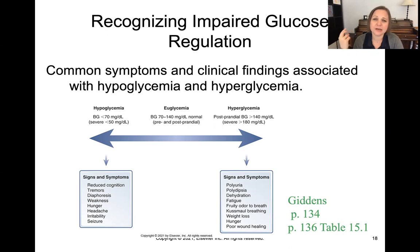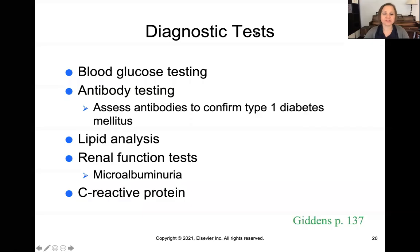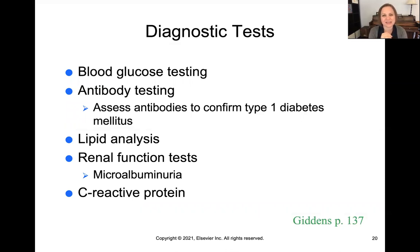Write those down: polydipsia, polyphagia, polyuria — urinating a lot, very thirsty, and very hungry. If you prefer an infographic, there's one here; you can pause and take a look. In terms of diagnostic tests, some things we can do quickly and others over time. The blood glucose finger-stick test at the bedside can be done quickly — it's minimally invasive, with a result within two minutes — which is really useful if you're worried a patient is hypoglycemic and needs immediate intervention.